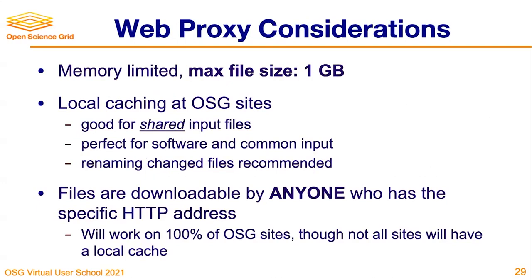Some considerations when using the web proxy: the max file size is one gigabyte. Local caching at OSG sites is great for shared input files — perfect for software, which you'll reuse across many jobs, and for common input. Be sure to rename files every time you update them, so you always know you're downloading the newest version and not an old cached copy. Files can be downloaded by anyone who has the HTTP address, so make sure these are public files. This works on about 100% of OSG sites, though not all sites will have a local cache, but the vast majority do.